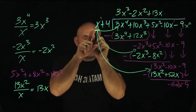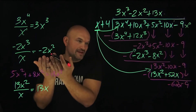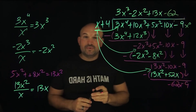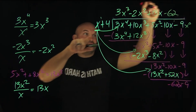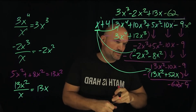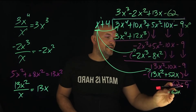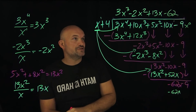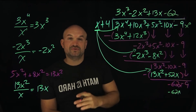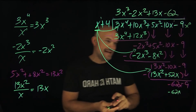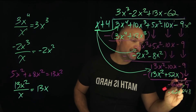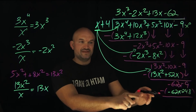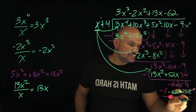How many times does x divide into negative 62x? That's going to be negative 62 — our last quotient term. Multiply: negative 62 times x is negative 62x, and negative 62 times 4: double 62 is 124, double again is 248, so negative 248. Subtracting the rows with that double negative, we get 239 as our remaining value.